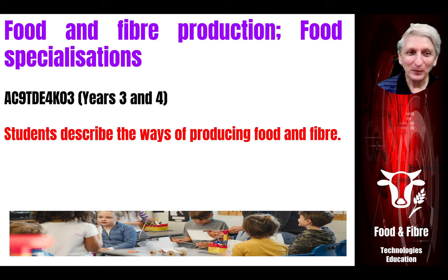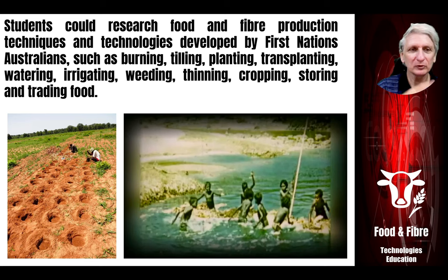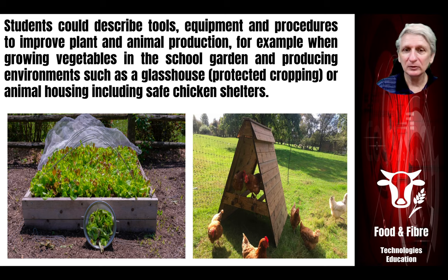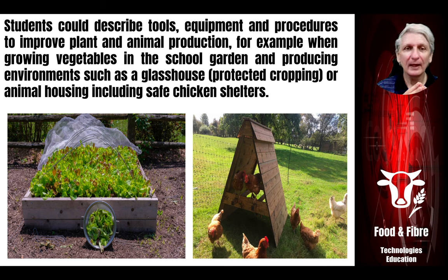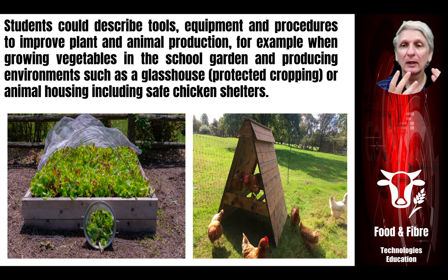In years three and four, we look at ways of producing food and fibre — how different Indigenous groups have been able to farm, irrigate, weed, crop, store and trade various food items. Looking at how this can be done in their own local environments such as the school — how they can create gardens and chicken pens. They could design various gardens or animal enclosures, thinking about the various properties needed to keep them safe, protect them from weather, protect plants from insects, flooding and too much water, and various other things that can be built into the design process around food and fibre.